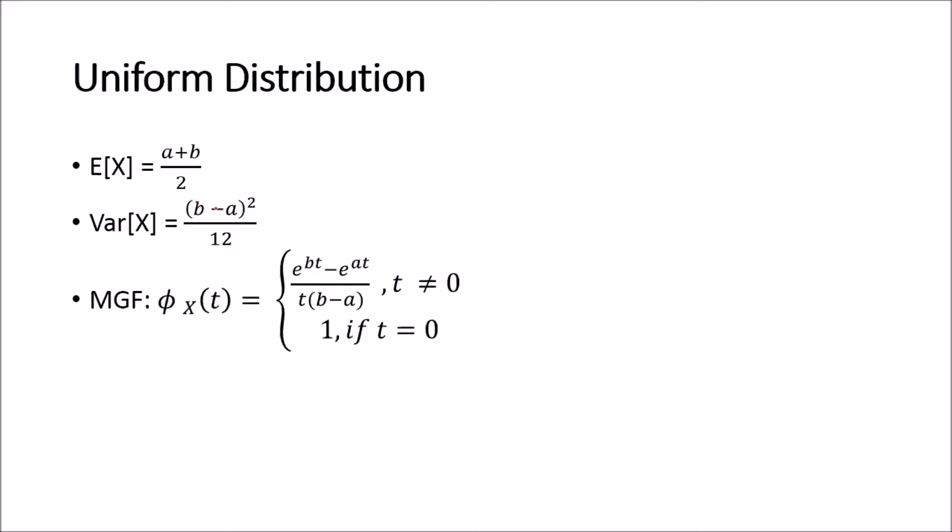The variance is (b-a)² divided by 12. And the moment generating function for a uniform distribution is given by (e^(bt) - e^(at))/(t(b-a)). And we know because t is in the denominator, we know that t can't equal 0. But in the case that t is equal to 0, then we know that this equation will simply be 1.